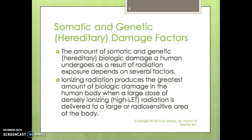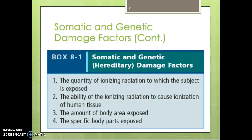Somatic and genetic or hereditary damage factors: the amount of biological damage a human undergoes as a result of radiation exposure depends on several factors. Ionizing radiation produces the greatest biological damage when a large dose of densely ionizing, or high LET, radiation is delivered to a large or radiosensitive area of the body. The four factors are: the quantity of ionizing radiation to which the subject is exposed; the ability of ionizing radiation to cause ionization of human tissue; the amount of body area exposed; and the specific body parts that are exposed.